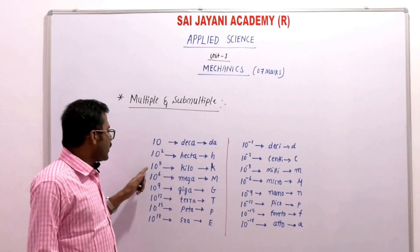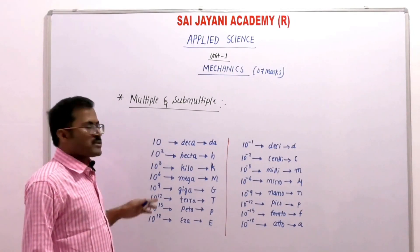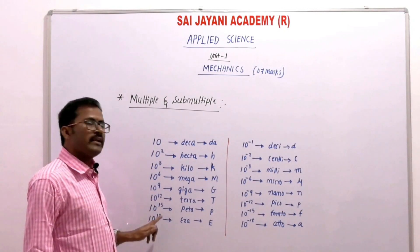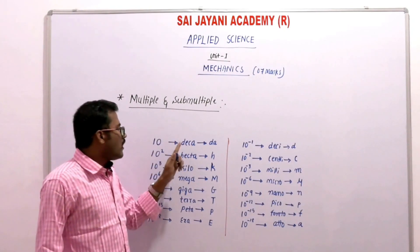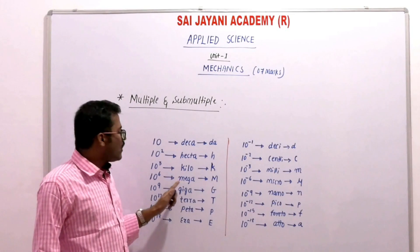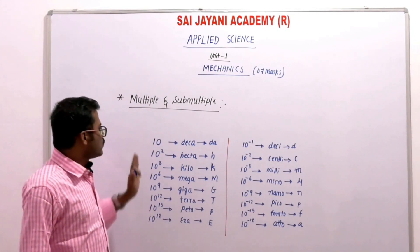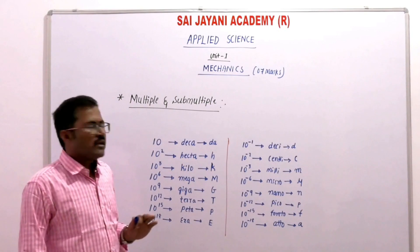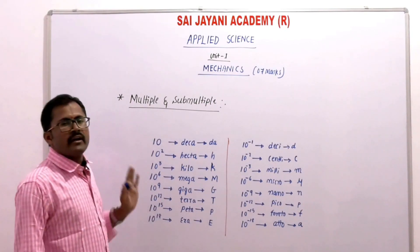So starting from 10, 10², 10³ — these are 3 terms using small letters. Then continuing in multiples of 3: 3, 6, 9, 12, 15, 18. The full list of positive prefixes is: deca, hecto, kilo, mega, giga, tera, peta, exa. These represent multiples for larger values.